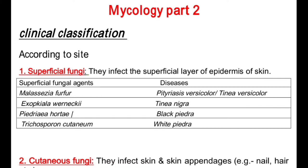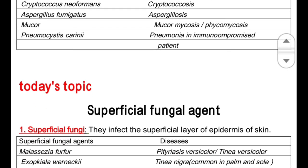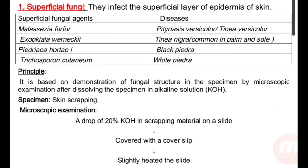Clinical classification according to the sites: superficial fungi, cutaneous fungi, subcutaneous fungi, systemic or deep fungi, and opportunistic fungi — with their fungal agents and diseases produced. Today's topic covers superficial fungal agents. Among the superficial fungi, we will be reading about pityriasis versicolor, tinea versicolor, black piedra, and white piedra.